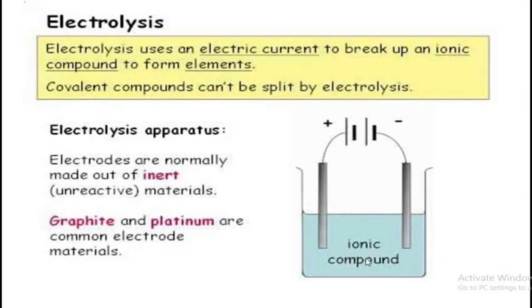The ionic compound acts as an electrolyte containing free ions that allow electricity to flow through it. It is molten or aqueous, and it is decomposed to form positive and negative ions. Examples include sulfuric acid, molten sodium chloride, copper sulfate, or their aqueous solutions dissolved in water. The anode is the positive and cathode is the negative terminal, and the battery draws electrons away from the anode, making the anode positively charged and the cathode negatively charged.